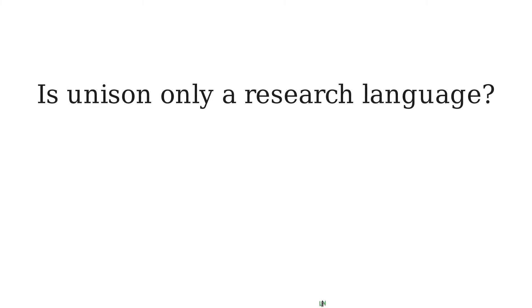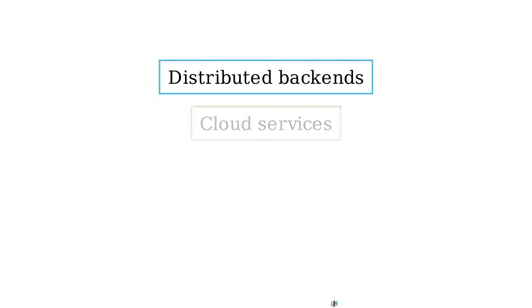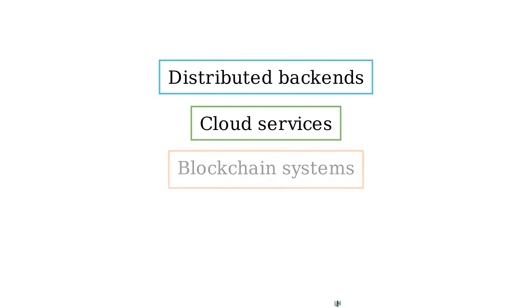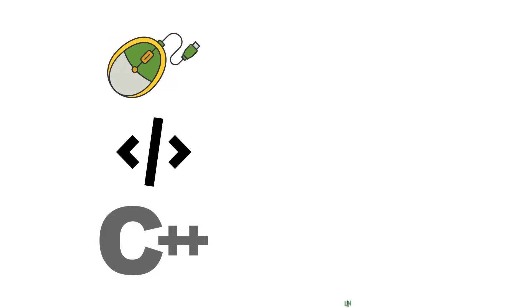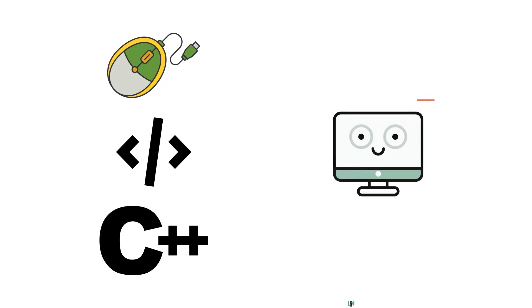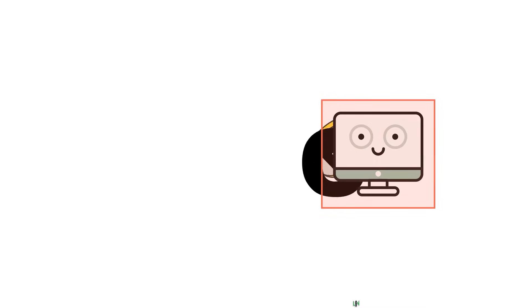Unison was not built only for academic papers. Its real-world applications include distributed backends, cloud services, blockchain systems, and infrastructures that run simultaneously across multiple locations. Unison's ultimate goal is to make writing distributed software as easy as writing a simple program.